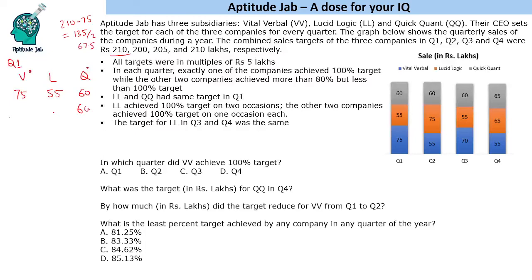QQ achieved 100% target in Q1. The total target is 210, so we have to allot the remaining 150 to VV and LL. Since LL and QQ had the same target and QQ's target equals its sales, we already know LL and QQ each have a target of 60, and VV's target is 90. So we are done with Q1.